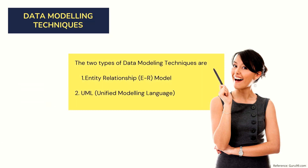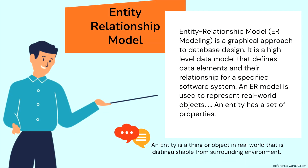There are mainly two data modeling techniques. One is known as the Entity Relationship Model and another is known as UML, or Unified Modeling Language. The Entity Relationship Model, or ER modeling, is a graphical approach to database design. It is a high-level data model that defines data elements and their relationships for a specified software system. An ER model is used to represent real-world objects, and an entity has a set of properties. An entity is a thing or object in the real world that is distinguishable from its surrounding environment — for example, a table in your database.